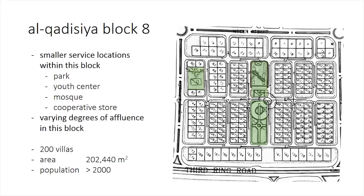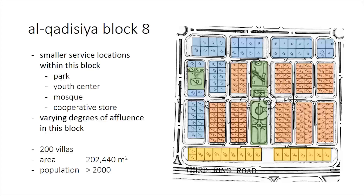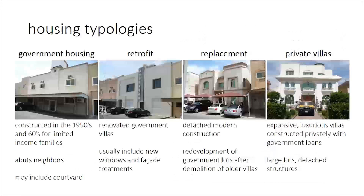Zooming in on Block 8, we see that the block consists of a number of smaller residential blocks and service elements, including a park, youth center, mosque, and cooperative store. Housing is built in varying densities, ranging from high density to medium density and low density along the ring road. In all, this block contains 200 villas, which accounts for a population of over 2,000 residents.